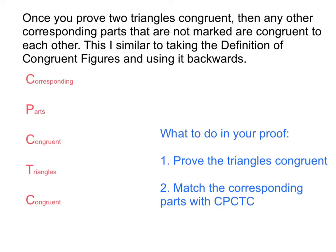There's a saying that we're going to use, and it's here to the left in red — it's what we call CPCTC. It's a reason that you're going to use in your proofs, and what it stands for is: corresponding parts of congruent triangles are congruent. That's what CPCTC stands for, and that's how we're going to abbreviate it in our reasons.